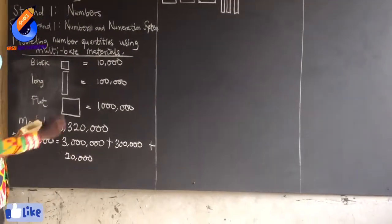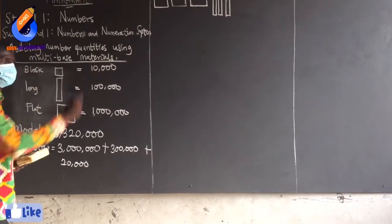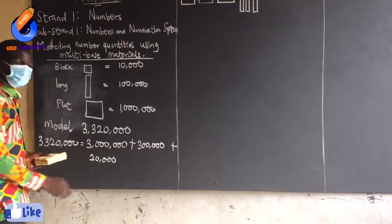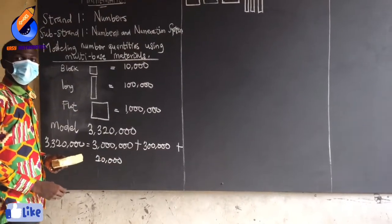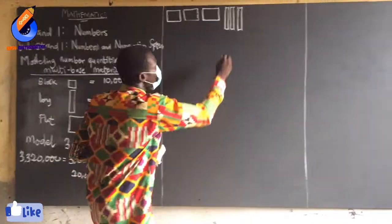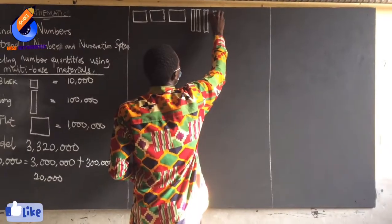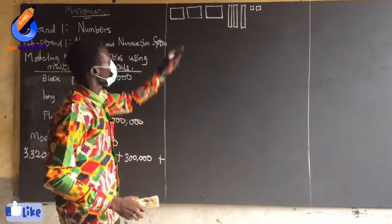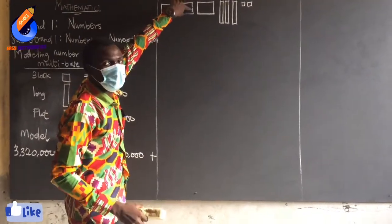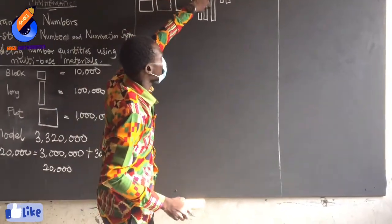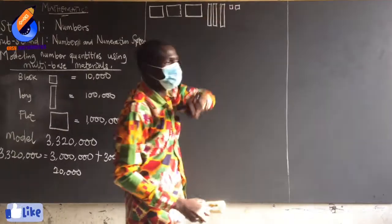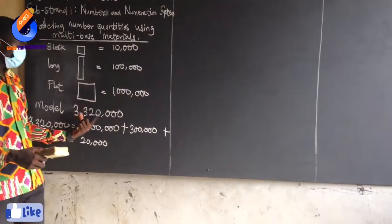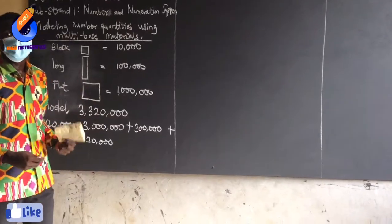Then I'll draw the blocks. One block is giving me 10,000. If 1 block is giving me 10,000, then how many blocks will give me 20,000? 2 blocks. So this is 3,000,000 plus 300,000 plus 20,000, which together gives me 3,320,000.